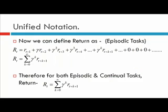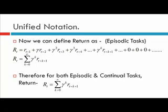With this absorbing state, we can have a unified notation for both continual and episodic tasks. We can represent the return in this single form — a summation over all k from 0 to infinity of gamma^k r_{t+k+1} — where for episodic tasks the rewards become 0 once the terminal state is reached, and for continual tasks the equation is as usual. This is our unified return for both episodic and continual tasks.